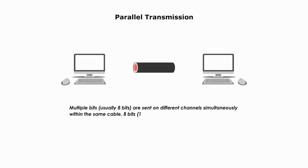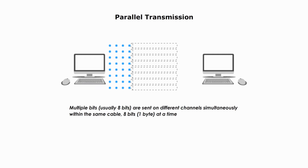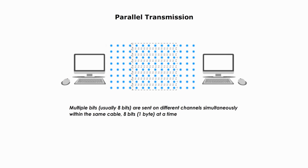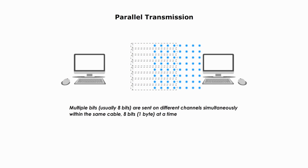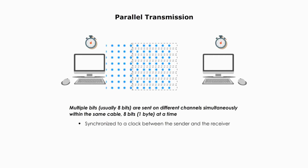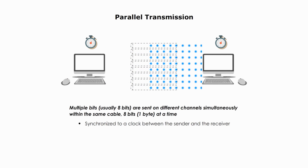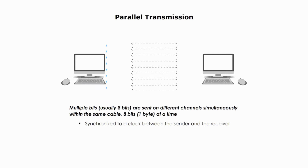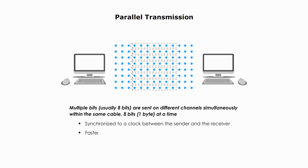In parallel transmission, multiple bits are sent on different channels simultaneously within the same cable, 8 bits at a time. Parallel transmission must be synchronized to a clock between the sender and receiver. It is faster than serial transmission, and it is used for short distances.